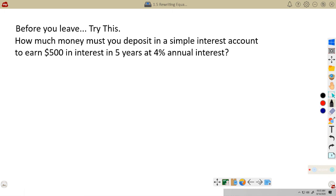You try this one here. Again, this is the same formula. Interest equals principal times rate times time. How much money must you deposit in a simple interest account to earn $500 interest in 5 years at 4% annual interest? You give this one a try. We'll have you put the answer in at the end of this video. But other than this, that is it for this video. So thanks a lot, and have a great rest of your day.